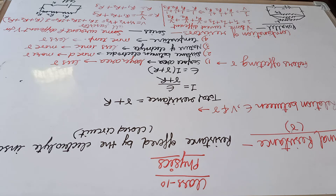The resistance which is offered to the flow of current by these fixed positive ions and the free electrons inside the electrolyte is called internal resistance. Internal resistance is the resistance offered by the electrolyte inside the cell to the flow of current when the circuit is closed.